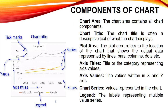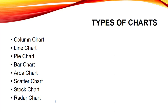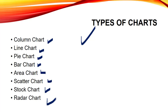Now we have to discuss about charts and their types. We only have to discuss eight types of charts: column chart, line chart, pie chart, bar chart, area chart, scatter chart, stock chart and radar chart. These are the eight basic charts that we mostly use in our work when using an Excel sheet. We will discuss all eight charts theoretically and then practically.